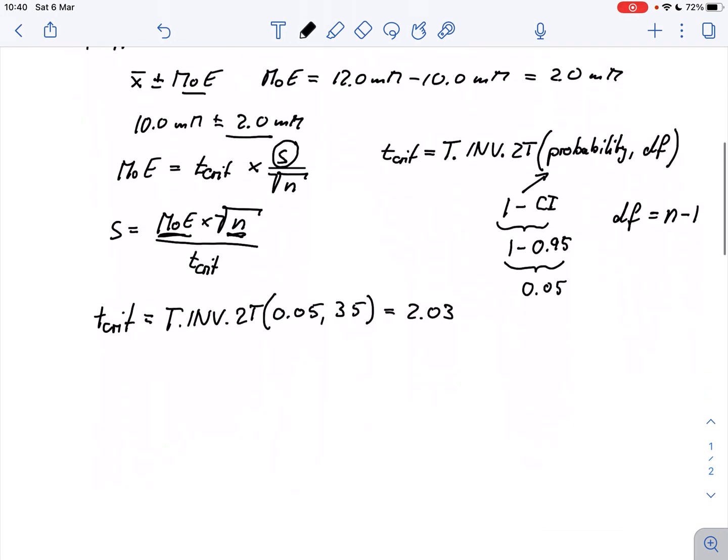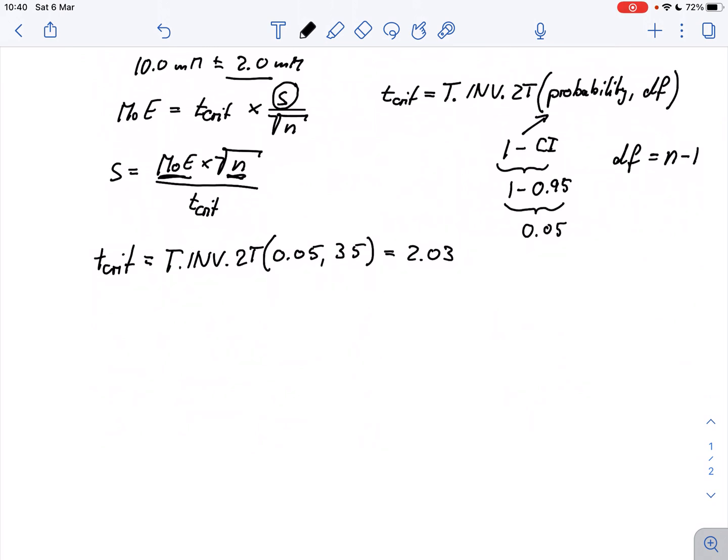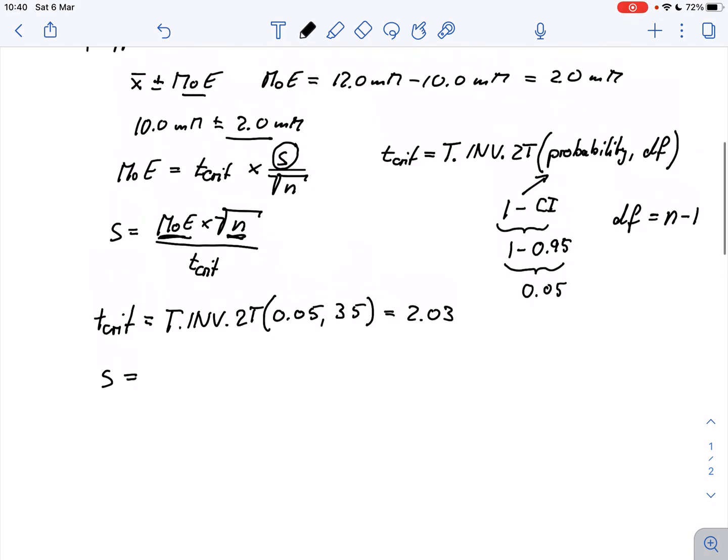And now we can very easily calculate this s. S equals the margin of error that we just calculated, so that's 2.0, times the square root of the sample size, so that was 36, divided by 2.03. And if we do that then our sample standard deviation is pretty close to 6. I think it is 5.9, so it's around 6.